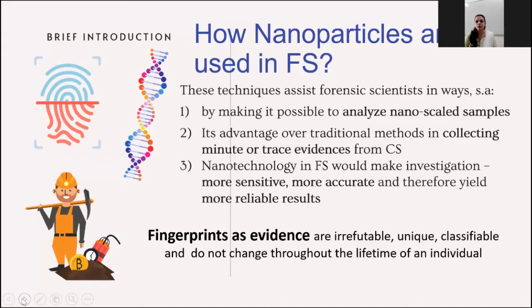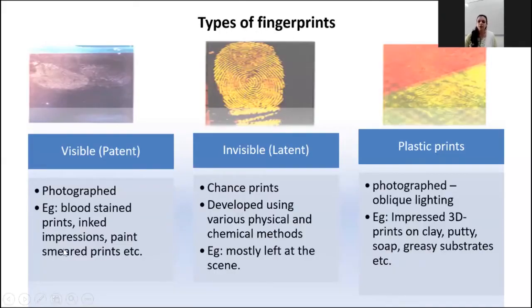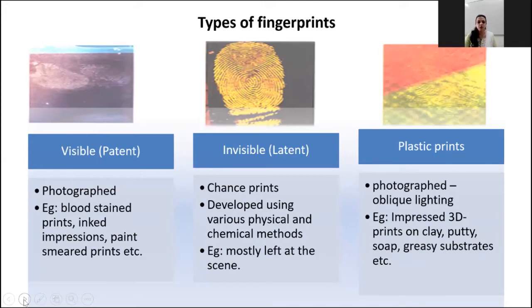Fingerprints as evidence are irrefutable, unique, and classifiable. They do not change throughout the lifetime of an individual — these are the fundamentals of fingerprints. Fingerprints are classified into three types: visible, latent, and plastic prints. Visible prints are also known as patent imprints, mostly blood-stained prints. Latent fingerprints are also called chance prints and are the most widely encountered prints at the scene of crime. Plastic prints are those indented on softer surfaces.